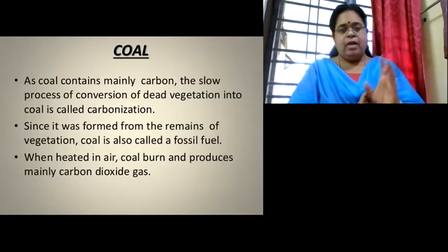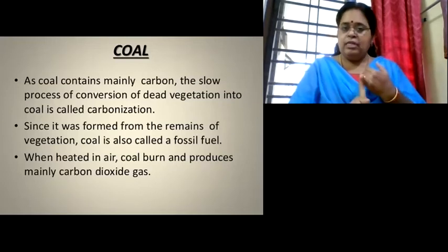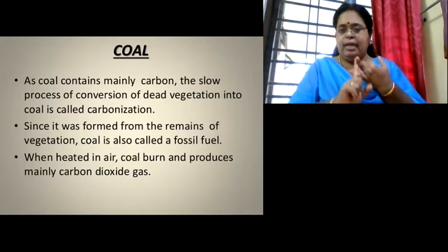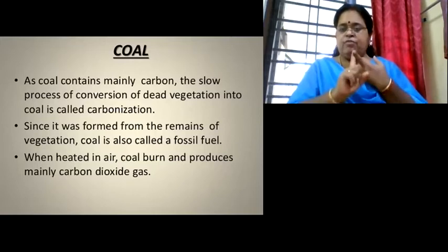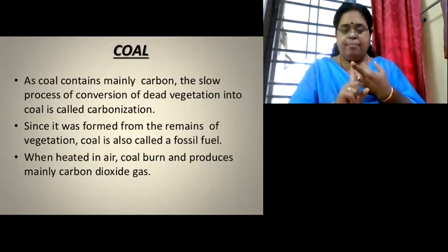So, the major constituent in coal is carbon. When dead plants are converted into coal, that slow process is called carbonization. Because coal is obtained from the remains of plants or vegetation, it is called a fossil fuel. When heated in air, it reacts with oxygen and forms carbon dioxide gas.